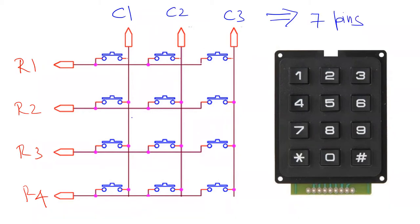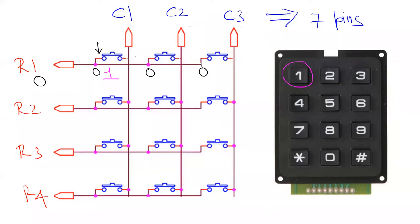The rationale behind the matrix format is that in each row, a key short-circuits that column with the row. For example, if you take button 1 — the numerical key 1 — when you press it, it short-circuits column 1 with row 1. If you put a logic 0 on row 1, that 0 will be available at all three column positions whenever a key in that row is pressed. The same logic from the row pin is communicated to the column pin whenever a key is pressed.